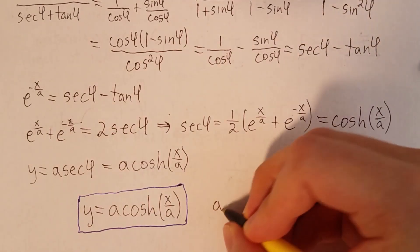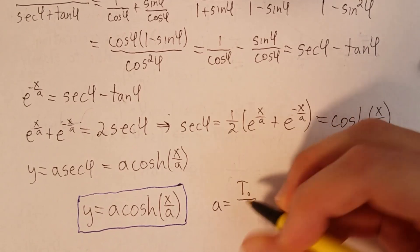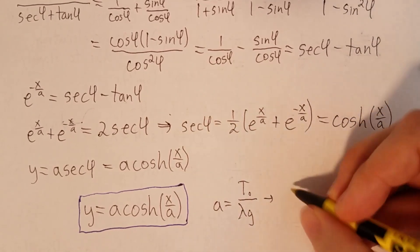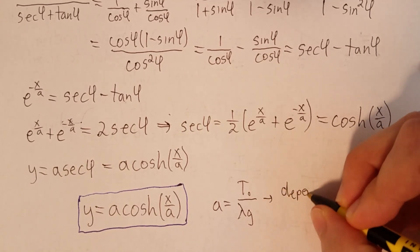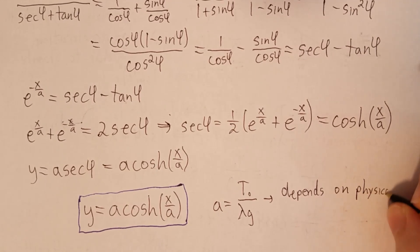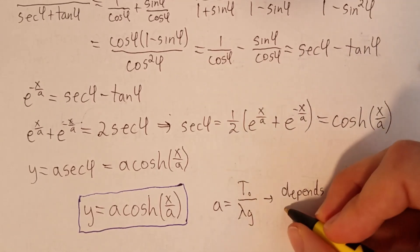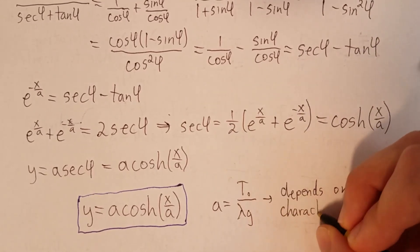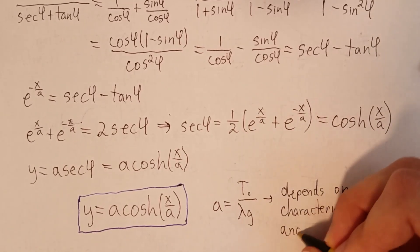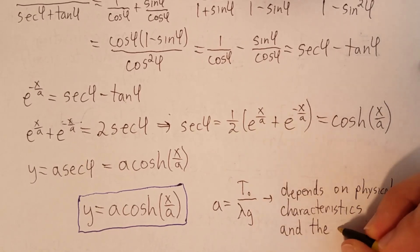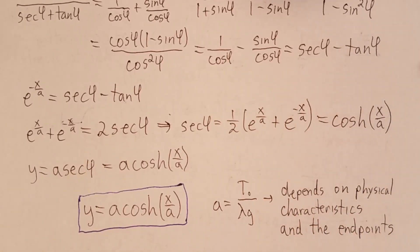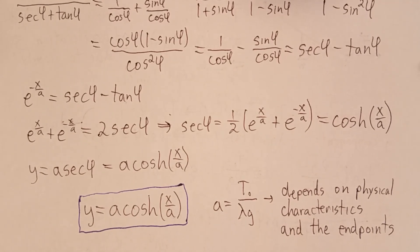Now let's think about what this a represents. Remember that a is T0 over λg, where λ is mass per unit length of the string, so a physical characteristic of the string. g is the acceleration due to gravity, so a property of the planet that we're on. And T0 is the tension at the center point, which is going to depend on physical characteristics of the string and also where we place the endpoints. So we see that once we have a particular string and define a pair of endpoints, the catenary is uniquely defined, which is what we want.